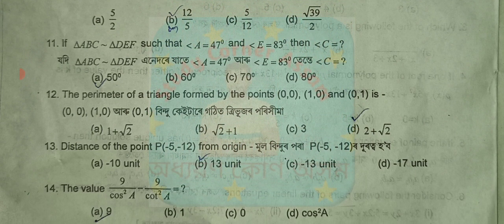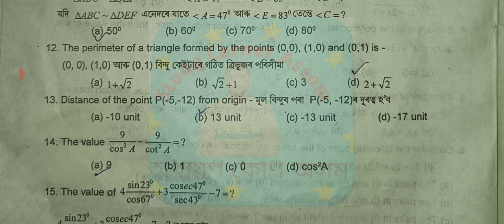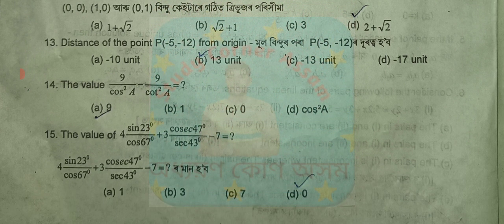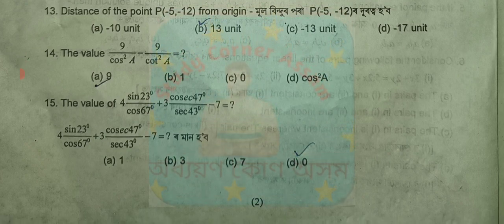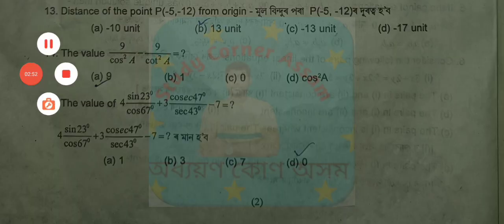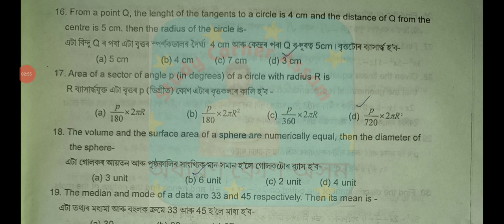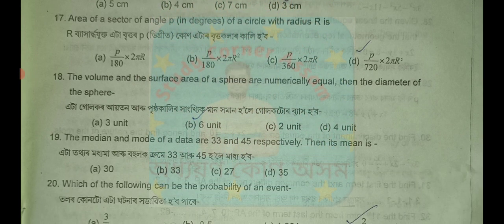Question number 13 — answer is option B. Next, question number 14 — answer is 9. Question number 15 — option D, zero. Question number 16 — answer is option D, three centimeters. Question number 17 — answer is option B. Next, question 19.